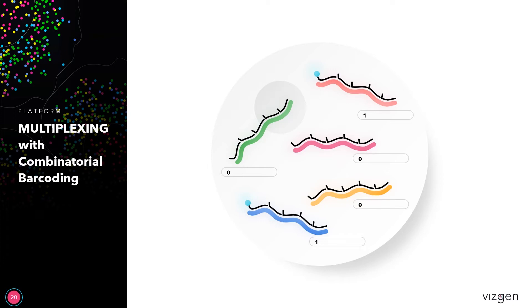In order to do this, we created a barcoding scheme where each targeted gene is assigned a unique binary barcode. This is a sequence of zeros and ones. We then read out the barcode with sequential imaging.